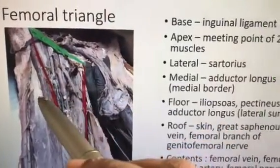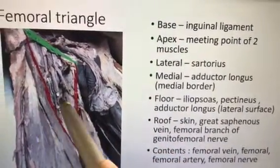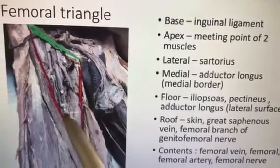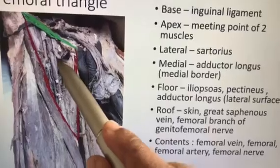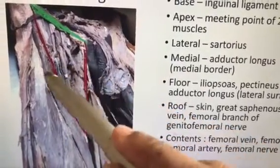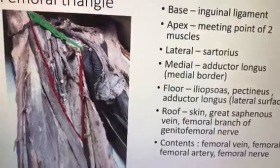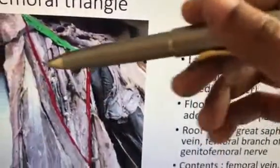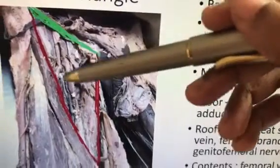For the roof, at minimum students should write: skin, superficial fascia, and fascia lata. On the fascia lata, the great saphenous vein passes through, entering here. Another important content is the femoral branch of the genitofemoral nerve.